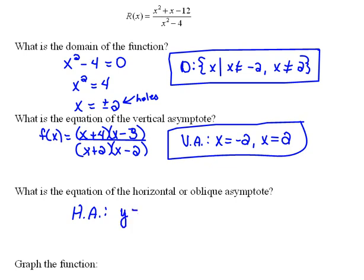So our coefficients here is 1 and 1, so that would be y equals 1 over 1, which is y equals 1. So that is our horizontal asymptote.